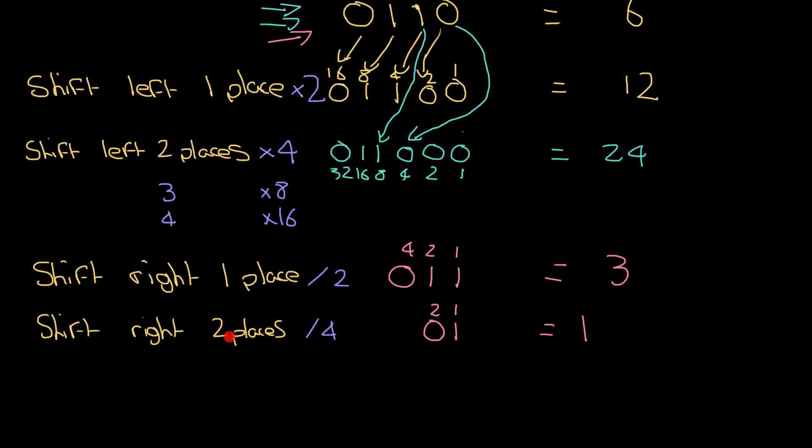6 divided by 4 isn't 1. But I haven't got any way of doing a decimal place. So if I shift right and that causes a 1 to drop off the end of that binary number, then I'm going to suffer a loss of accuracy. I'm not going to get exactly the right result. And that really is all there is to it.